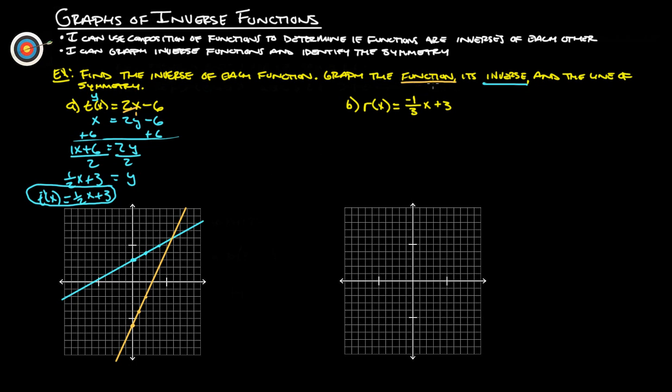Now, we graph the function, we graph the inverse, and now we're going to graph the line of symmetry. So let's do that maybe in purple. Line of symmetry. So it's basically, what line does this get reflected across? And hopefully you can see that it's going to be right down the middle here. That purple one is the line of symmetry, otherwise known as the LOS. You'll sometimes hear that called.